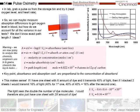We can measure absorption differences to get oxygen level in the blood, because hemoglobin and deoxygenated hemoglobin have different absorption profiles. Oxygenated hemoglobin is going to look more red, whereas deoxygenated hemoglobin is what gives your blood more of a blue color.